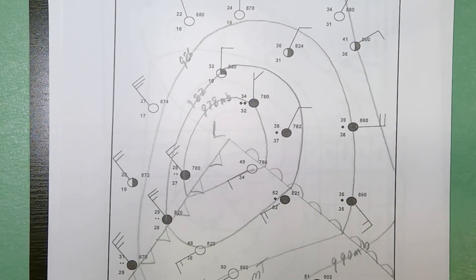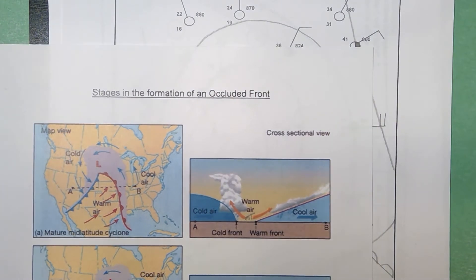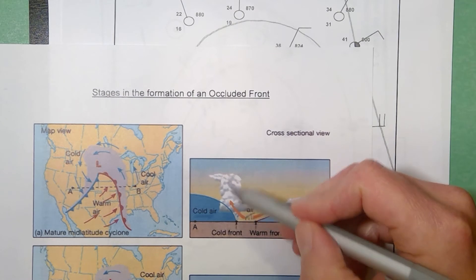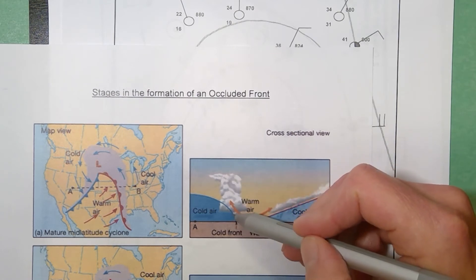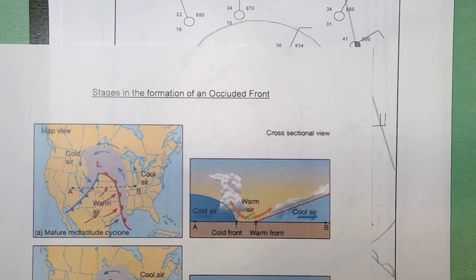Now it's asking you to shade in where the precipitation is occurring, and this is relatively consistent. When you look at different fronts, if I show you this part right there, the cross-sectional view, you tend to get heavy, dense clouds. You get cumulonimbus clouds, so you get short, heavy rain at and slightly behind the cold front, and if this is my warm front, you get precipitation ahead of the warm front.